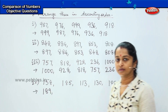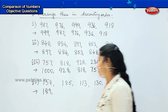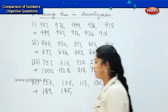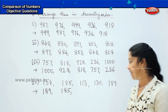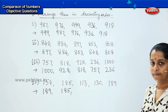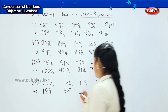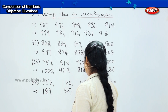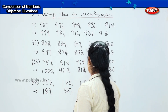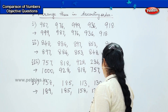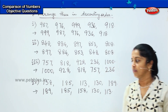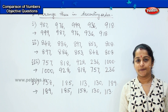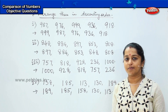What is the next number? It is 185. What is the next number after that? Very good, it is 158. Then 130, and last it is 113. Children, are you clear with these questions? Shall we have some more?